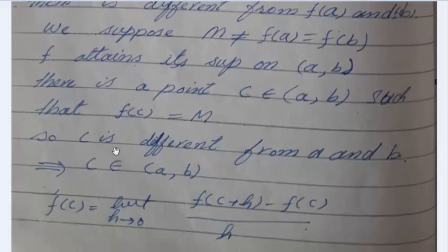So, c is different from a and b, and then c belongs to open interval (a,b). This means c is one of the points that is different from a and b.